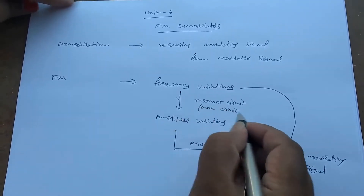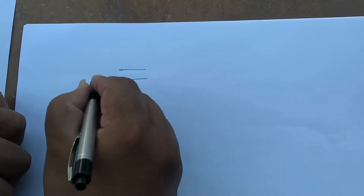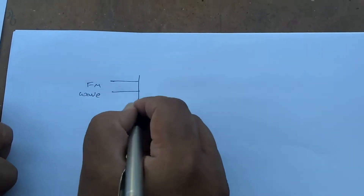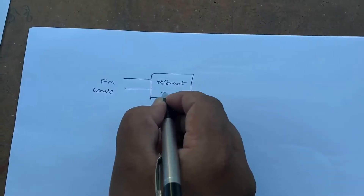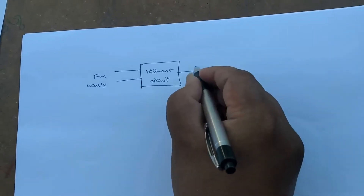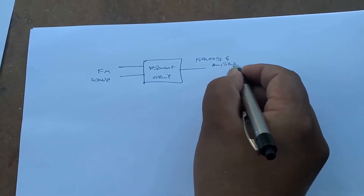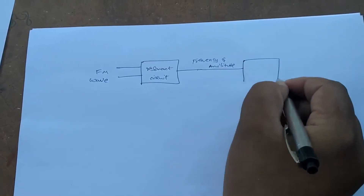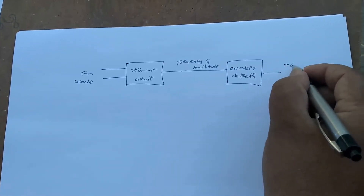Now we will discuss the block diagram related to this process. The input signal is an FM modulated signal, which is connected to the tank circuit or resonant circuit. The resonant circuit converts frequency variations into both frequency and amplitude variations. Then we apply an envelope detector, and from that we get back the recovered modulating signal.